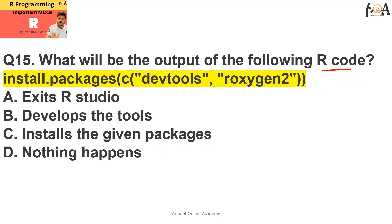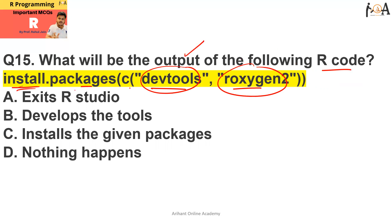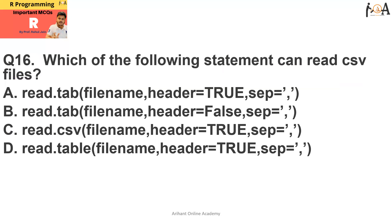Question number 15: what will be the output of the following R code — install.packages(c('devtools', 'roxygen2'))? This code is going to install the two packages mentioned: devtools and roxygen2. The output is that it installs the given packages, so that option is the correct answer.